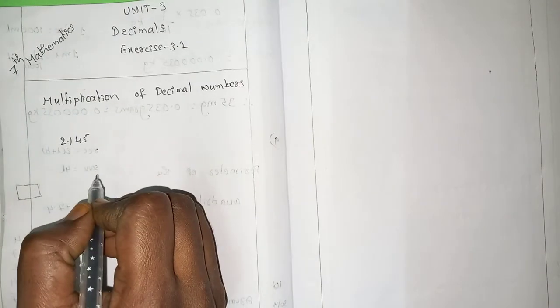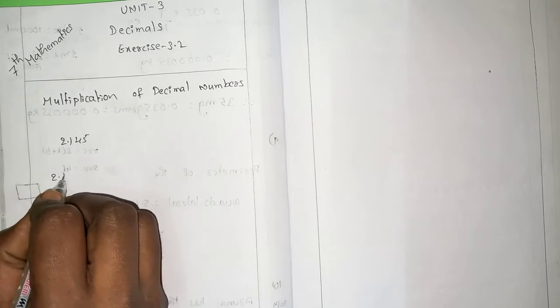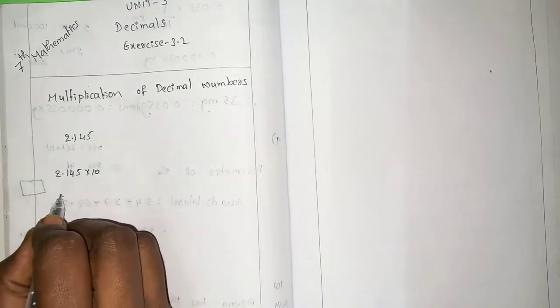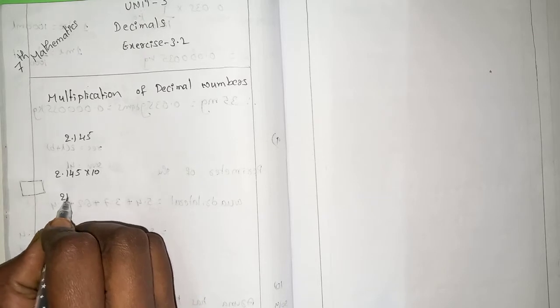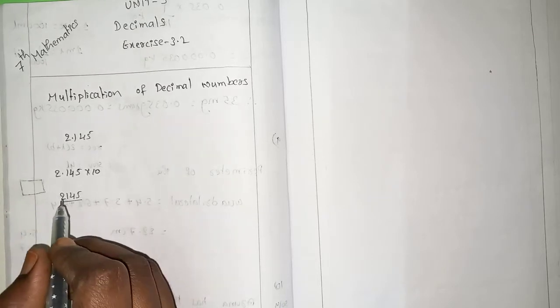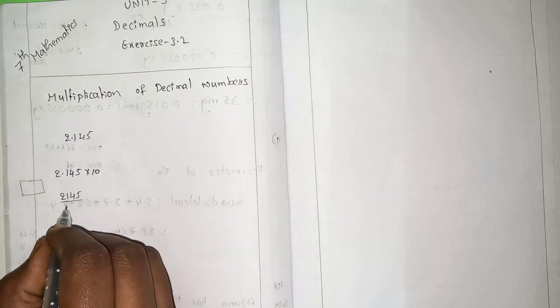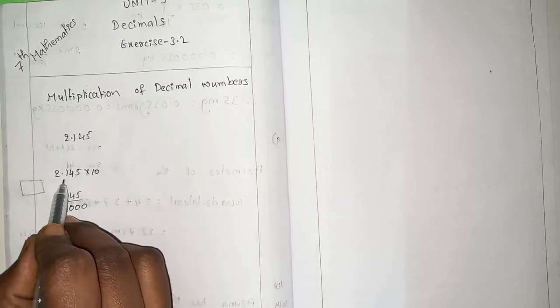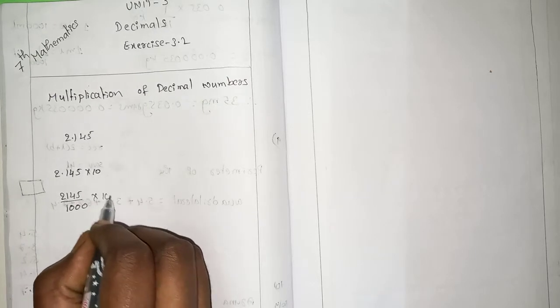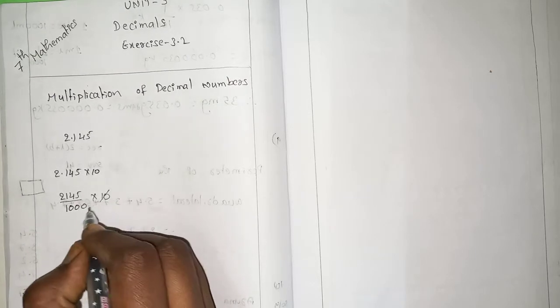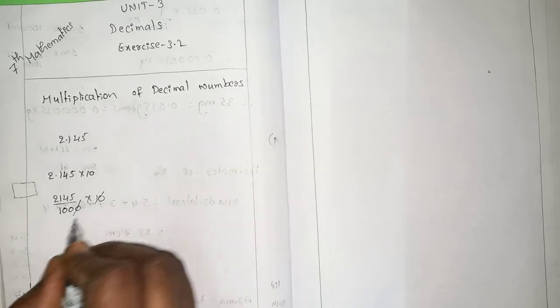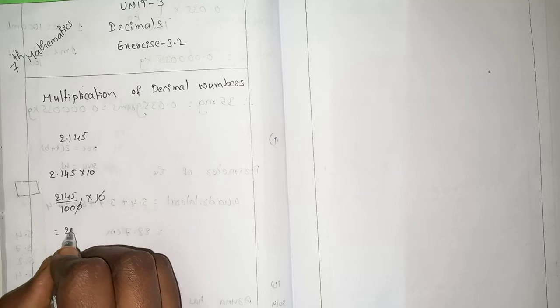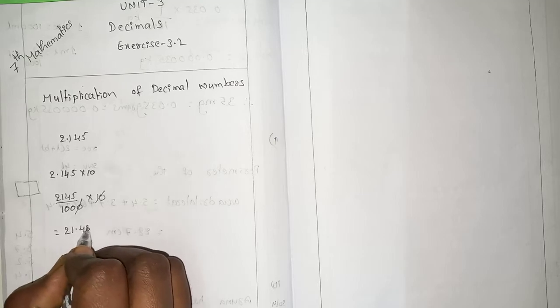Now, I am going to multiply 2.145 into 10. So, how to do this first? 2145 and make it as a fraction 1000 because 3 numbers after dot into 10. 10 cancel with 1 zero, only 100. Now, how many zeros are there in down? 2 zeros. So, it will become 21.45.